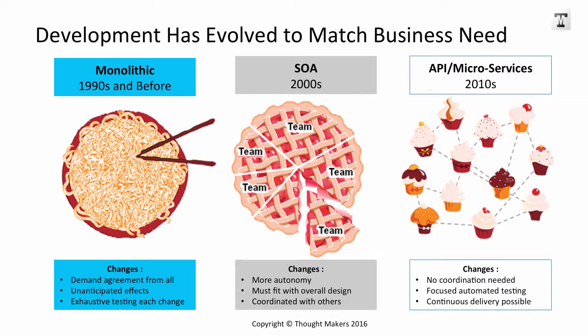Modern development is much more granular — development using APIs where everything is written with an API interface, an application program interface. Using an industry standard approach, the most modern variant being REST and its preceding one SOAP, with REST being the simpler one using JSON. And microservices, where we compose lots of little completely decoupled services together to form macro services and expose them as APIs so that we can integrate the different parts of our business, both internal and external.